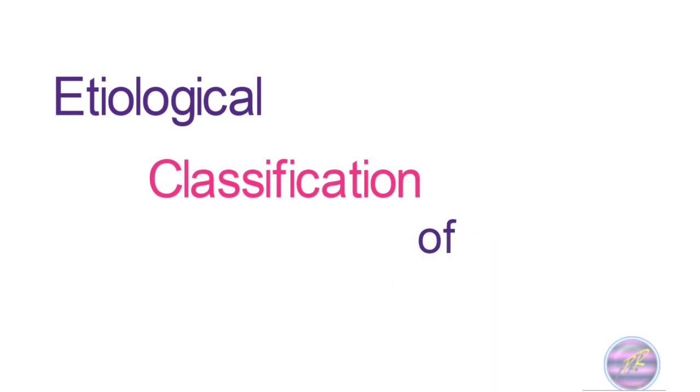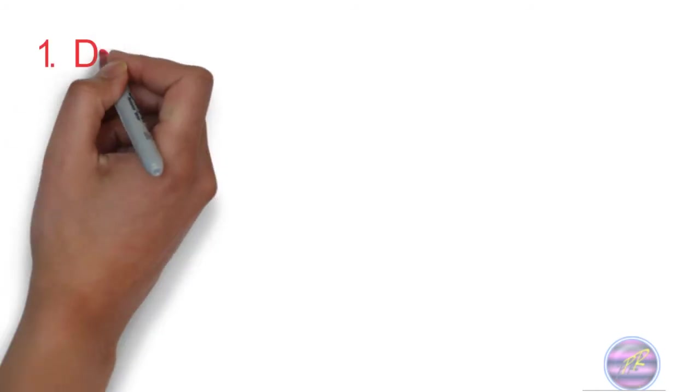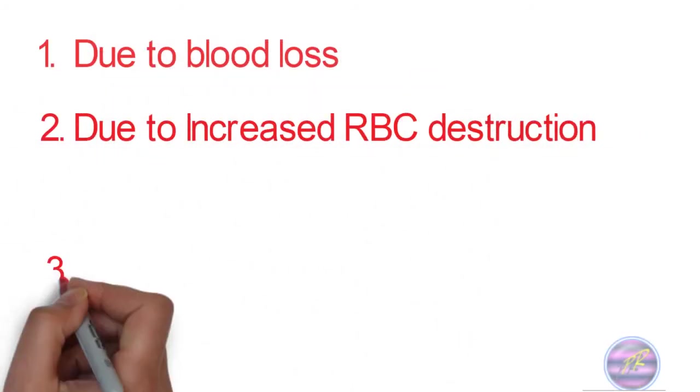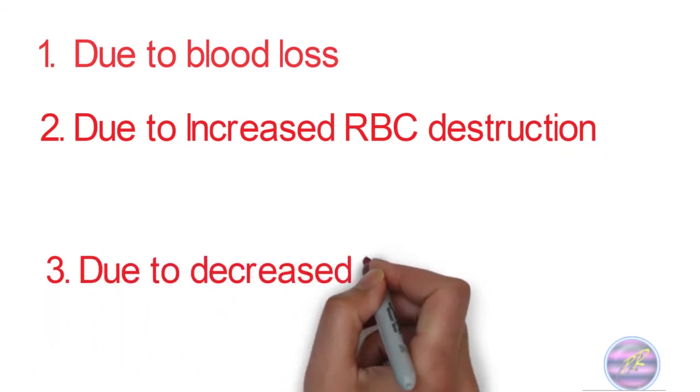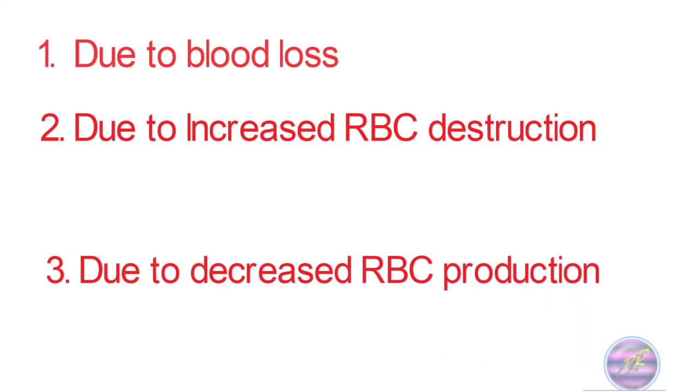In the previous video, we dealt with the causes and examples of anemia due to blood loss and anemia due to red cell destruction. In case you have missed the first one, the link will be in the description below and the i button on top.